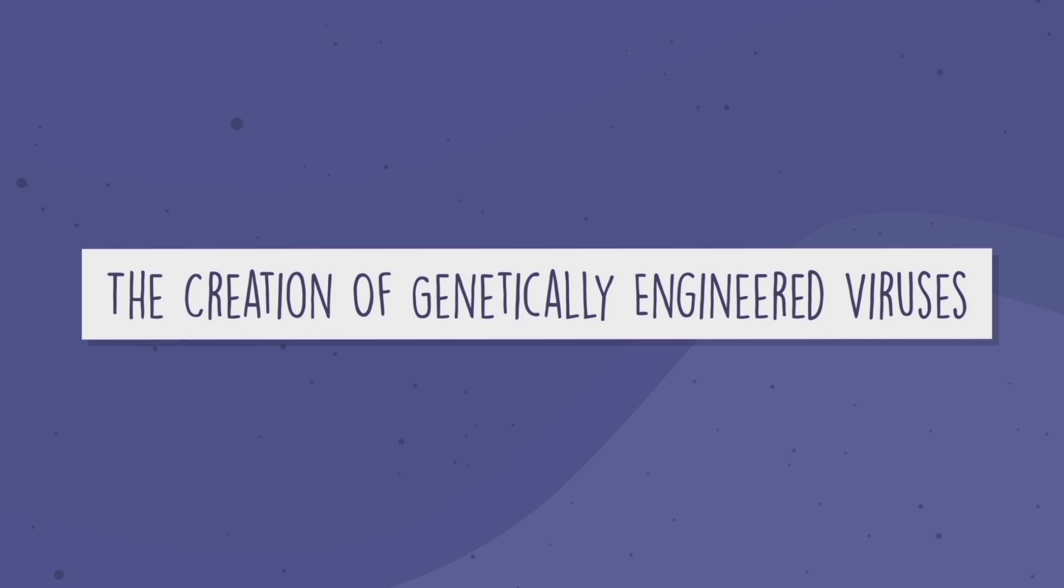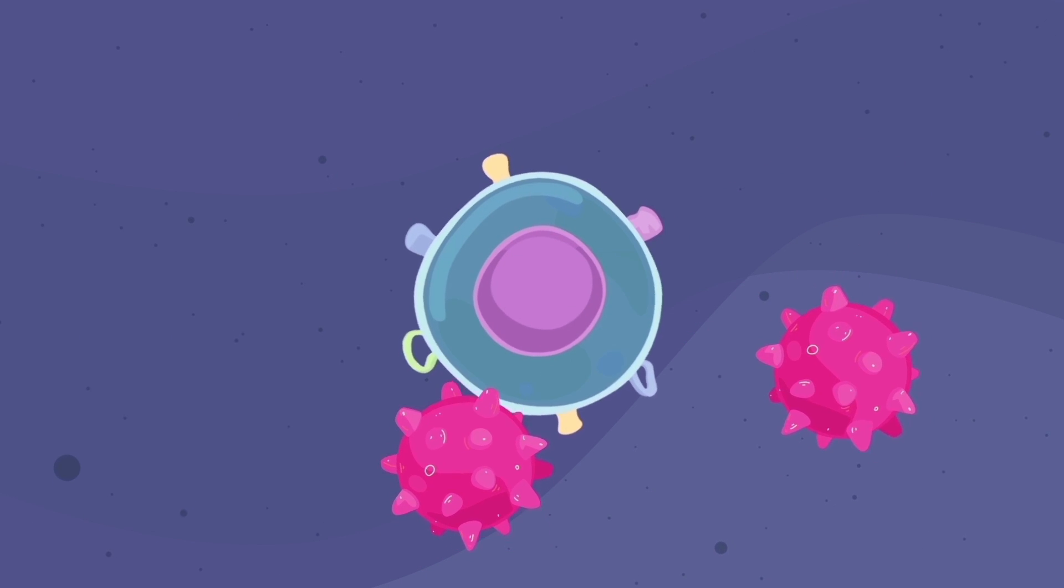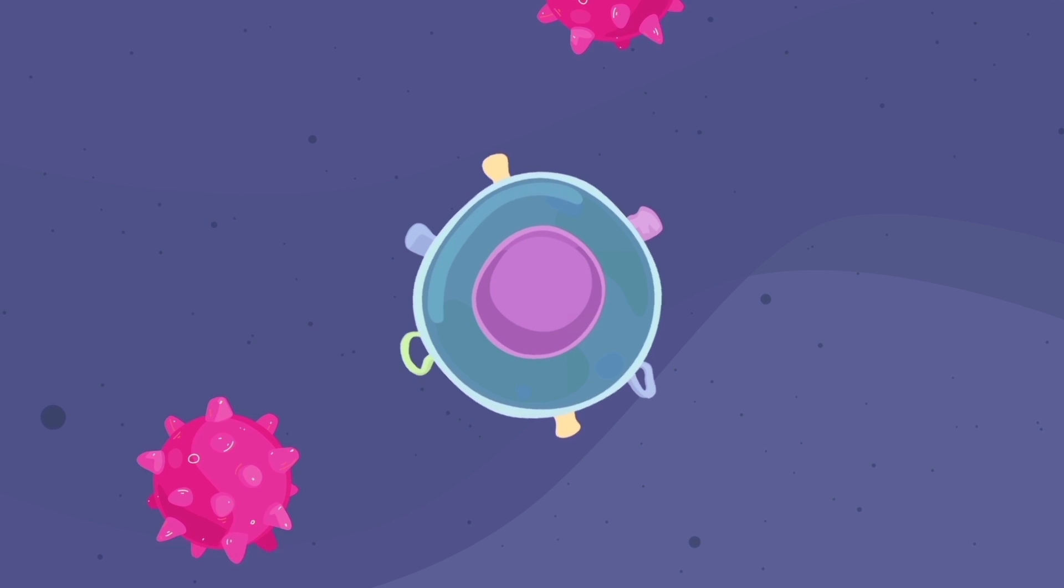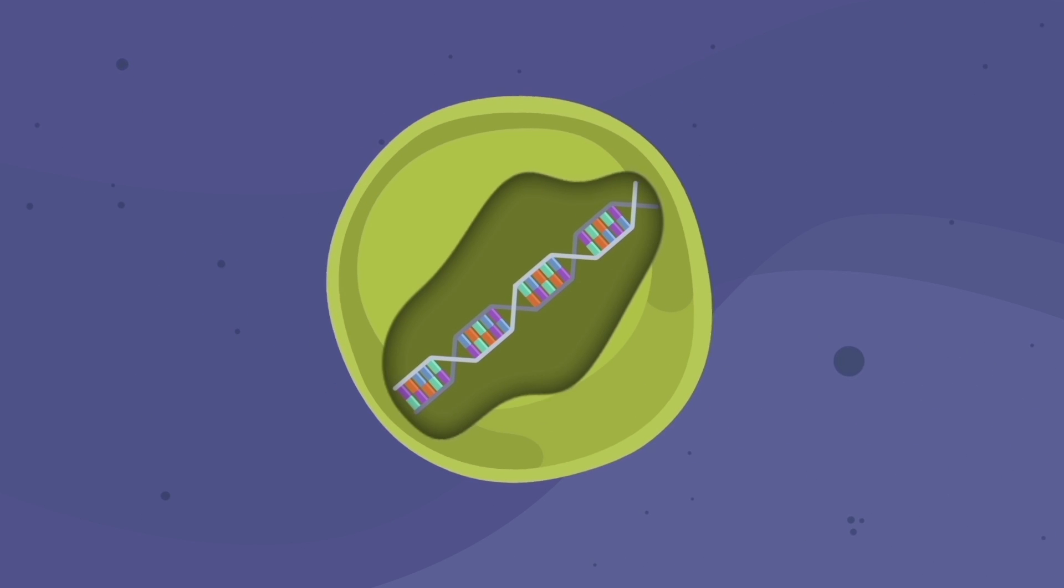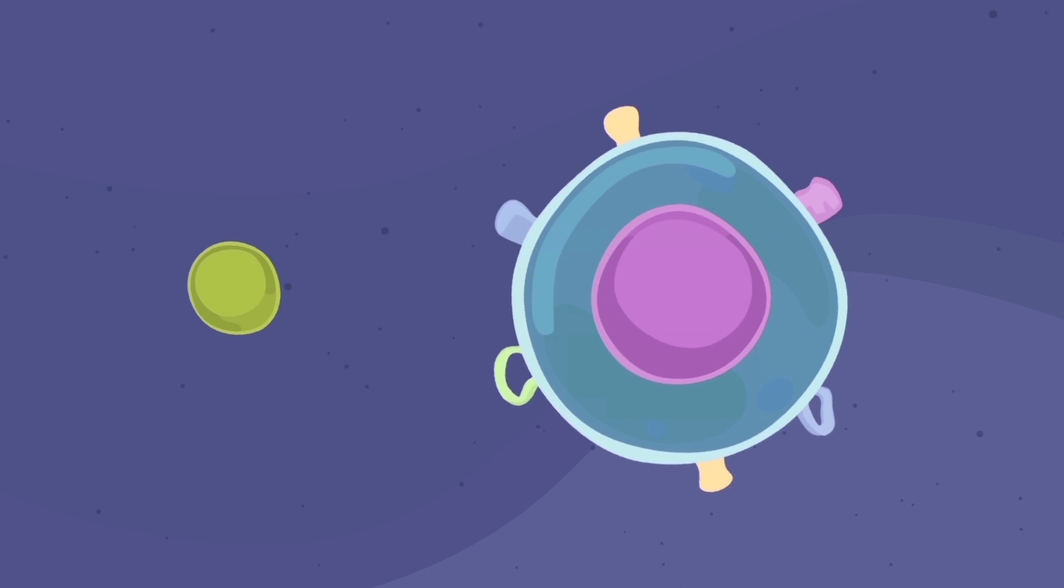The creation of genetically engineered viruses. But what if researchers wanted to program cells so they started performing a special task? For example, scientists want a T-cell to synthesize a special protein on its surface so the cell can find, latch onto, and destroy cancer cells.